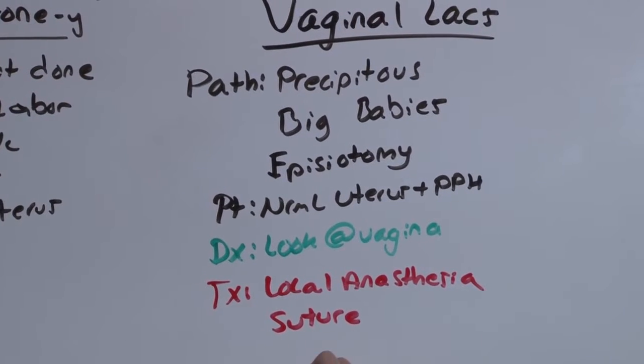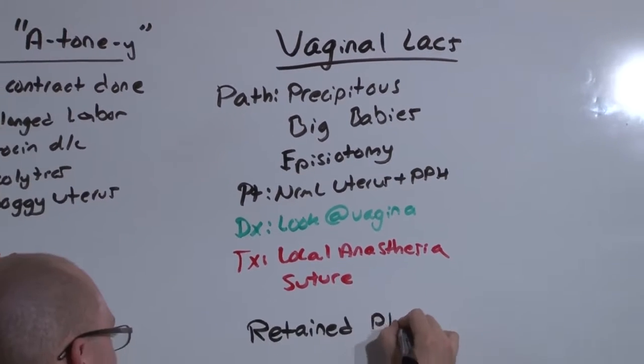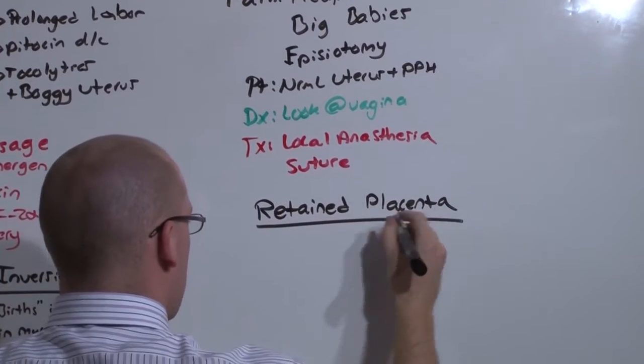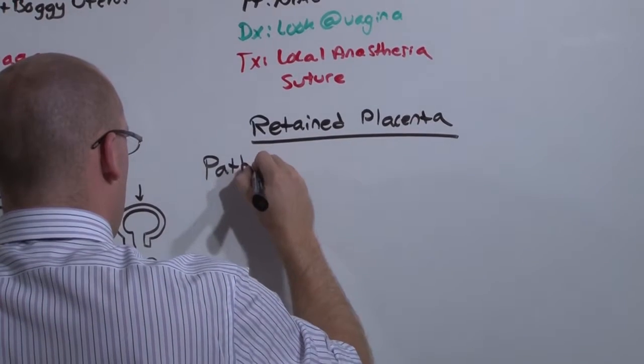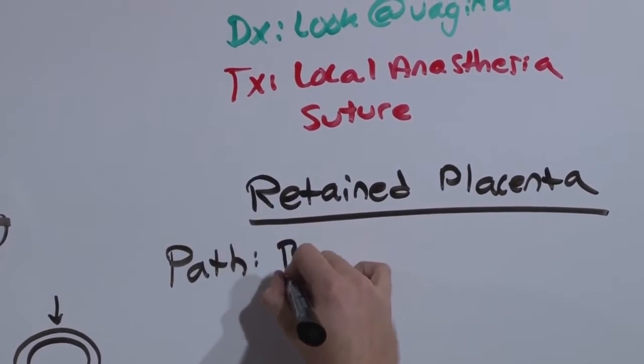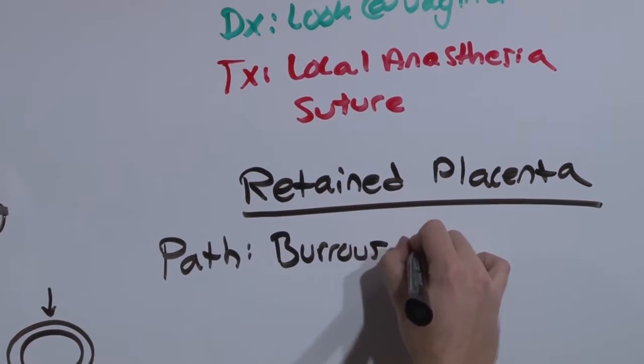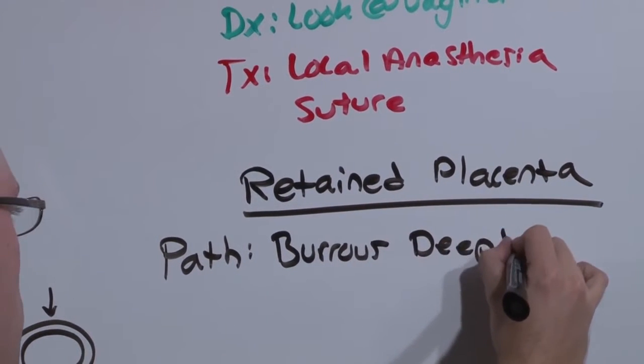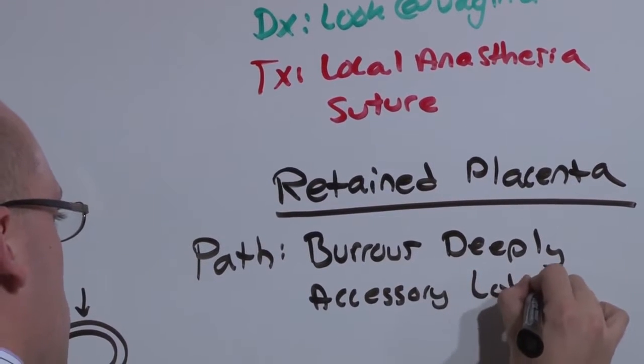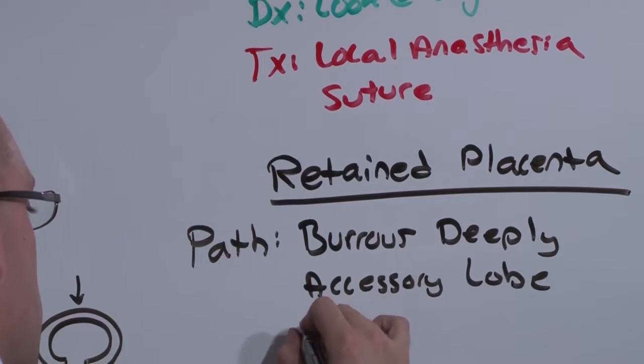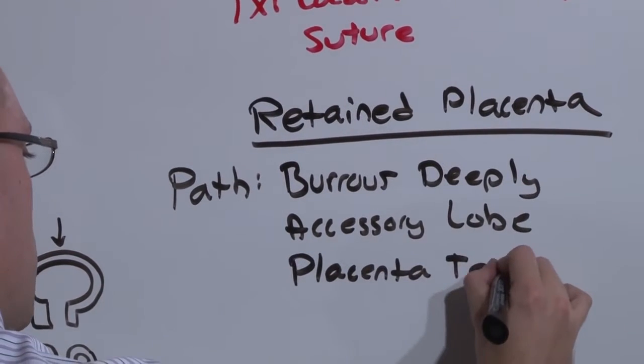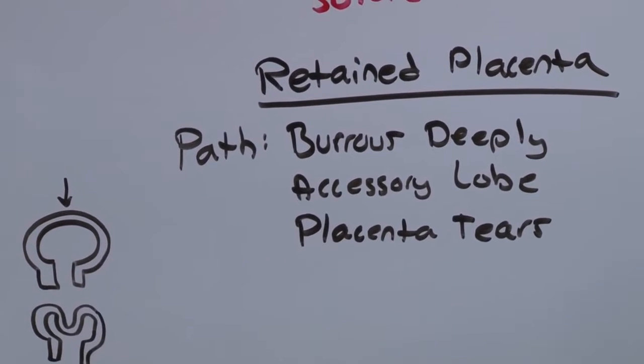Retained placenta is the reason why you look at the placenta after every delivery. It's caused either by the placenta burrowing too deeply or by the presence of an accessory lobe, such that as the placenta delivers, the placenta tears, leaving behind a piece of the placenta still in the uterus.